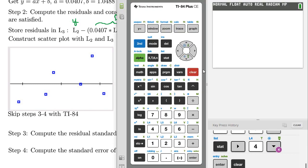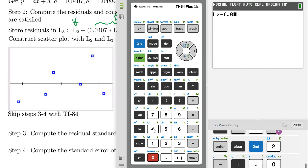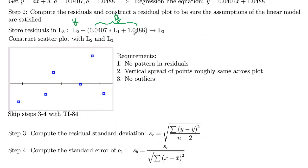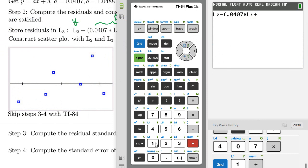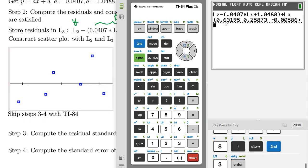So I'm going to go ahead and clear this out. And then I'm just going to type list two, which is going to be the second function of two, and then minus parentheses 0.0407, times list one, so times second list one. And then our y intercept on the end, plus 1.0488, close parentheses up. And then the store button gives that right arrow. We're going to store that in list three, which is second function of three, and then we press enter.